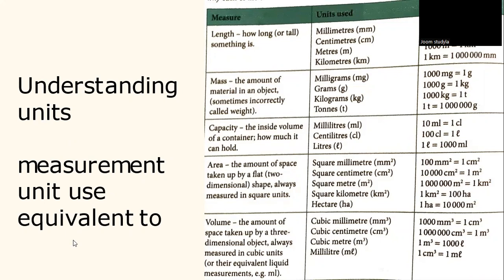Capacity. Capacity is the inside volume of a container and how much it can hold. The units that we use are milliliters, centiliters, and liters. 10 milliliters is equivalent to 1 centiliter. 100 centiliters is equivalent to 1 liter. And 1 liter is equivalent to 1,000 milliliters.